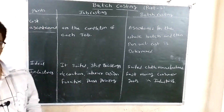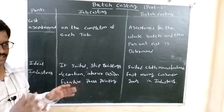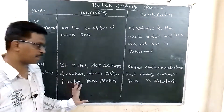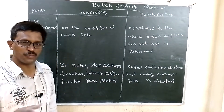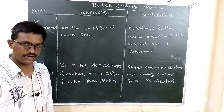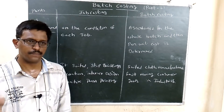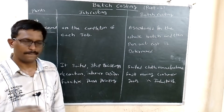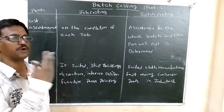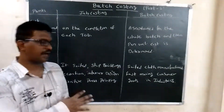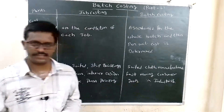Batch costing is suitable for craft manufacturing and fast-moving consumer goods industries — such as soaps, toothpaste, food items, biscuit packets, medicines, and other bulk-manufactured goods that are kept ready in stock and produced continuously to meet ongoing demand.